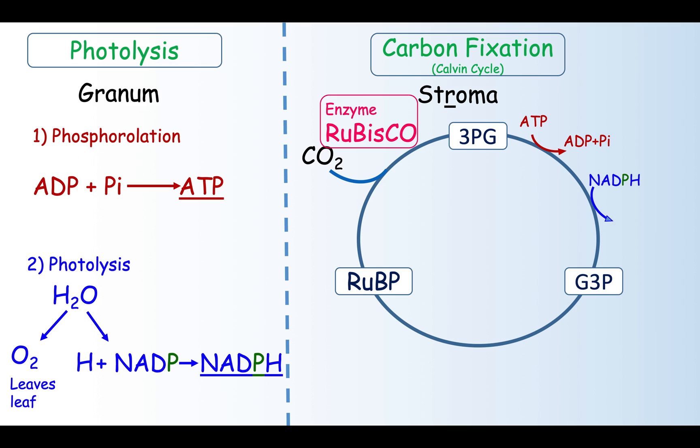G3P is used to generate RUBP using ATP which is broken down to ADP. Also at this stage glucose is synthesized and this can be used in four key areas. You have respiration which provides energy for growth and repair.